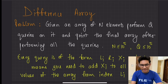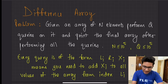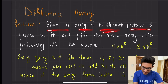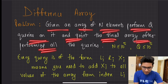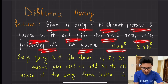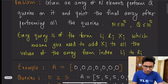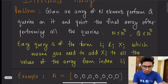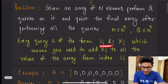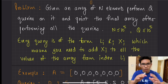For this, I've taken a problem statement. The problem is: given an array of N elements, perform Q queries on it and print the final array after performing all the queries. The constraints given are N is less than or equal to 10 to the power 5, and Q, the number of queries, is also less than or equal to 10 to the power 5. In every query, you have to go from the L-th index to the R-th index and add the value X to all the values present from L to R.